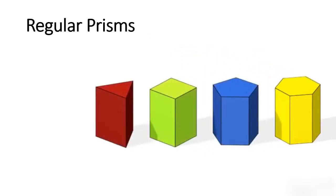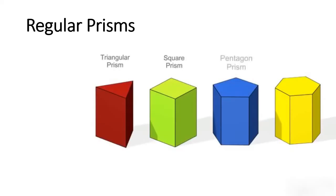These are some examples of regular prisms that we will be discussing: triangular prism, square prism, pentagonal prism, hexagonal prism, and so on.